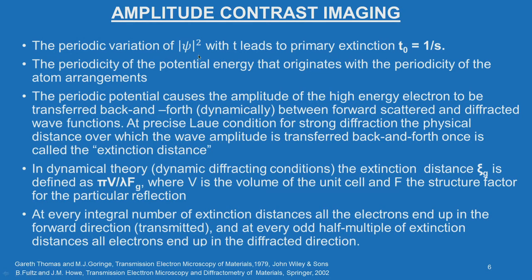The periodic variation of Ψ² (intensity) with thickness T leads to a primary extinction where T₀ = 1/S. The periodicity of the potential energy originates with the periodicity of the atomic arrangements. We will now try to answer qualitatively why the intensity oscillates in this manner.